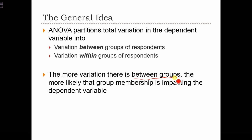So the more variation there is between the groups, the more likely that the group membership is impacting the dependent variable. The more likely it is that drug use categories are affecting how long people spend in prison.